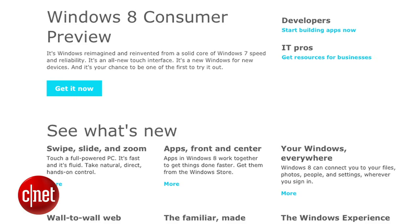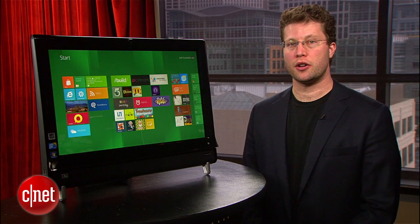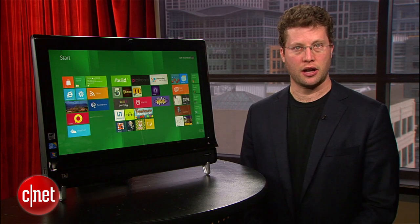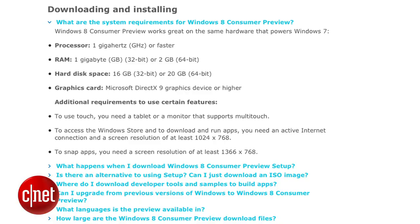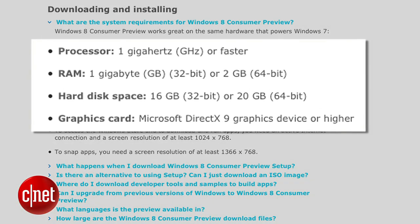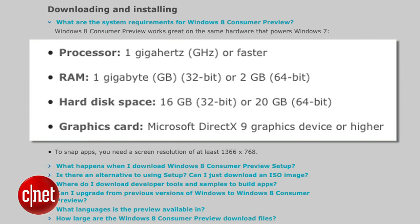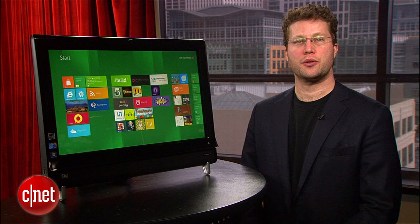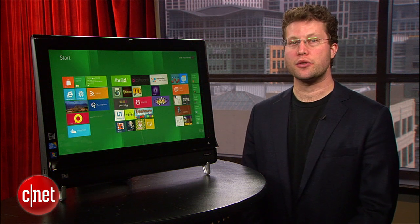There are some requirements, though. Most Windows 7 computers ought to be able to handle Windows 8. However, you'll want to make sure you have a 1 GHz or faster processor, 1 GB of RAM for a 32-bit computer or 2 GB for a 64-bit computer, a 16 GB hard drive for 32-bit or 20 GB hard drive for 64-bit, and a graphics card that supports Microsoft DirectX 9 or higher.